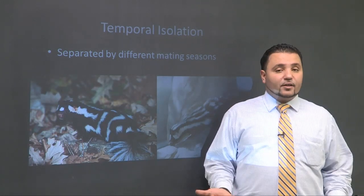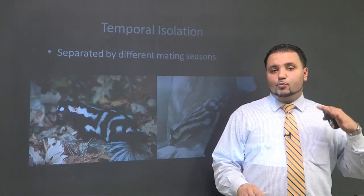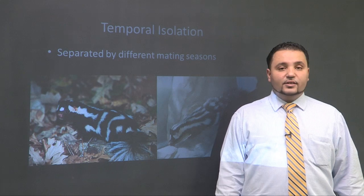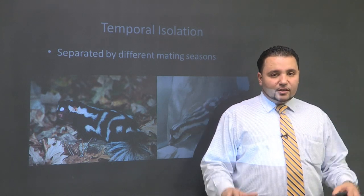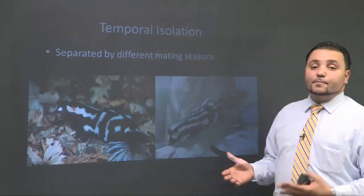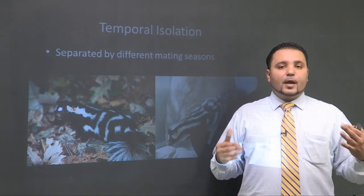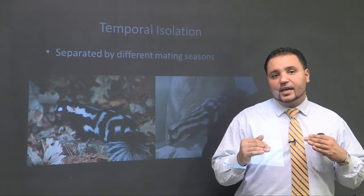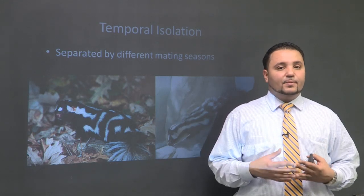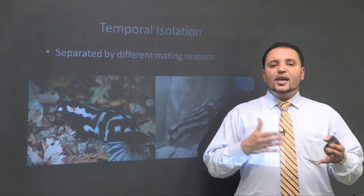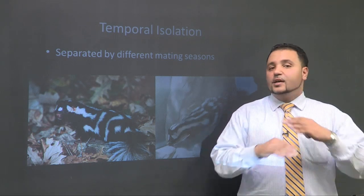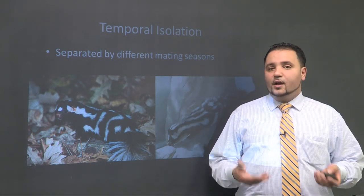Next is temporal isolation, which just means that two species mate at different mating seasons. Here I have two different skunks — the east skunk, found on the eastern coast of the United States, and the west skunk. The two different skunk species actually mate at different times of year: this one mates in early spring while this one mates in late summer. Temporal isolation is when your circadian rhythms kick in — you have this biological clock that says it's time to mate. If they're two separate species with different temporal periods, this barrier shows up and they can't become a different species.